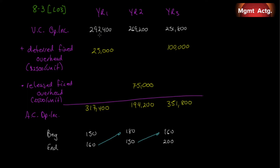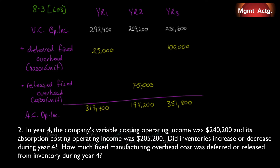Notice how variable costing goes from $292 to $269 to $251 — a declining trend. Since only sales drive variable costing operating income, we can say sales are declining. But absorption costing went from $317 down to $194 and then fully rebounded to $351, giving the impression of a tough year followed by strong growth — when in reality, it's just that inventory grew from 160 to 200, deferring costs and potentially overvaluing inventory.